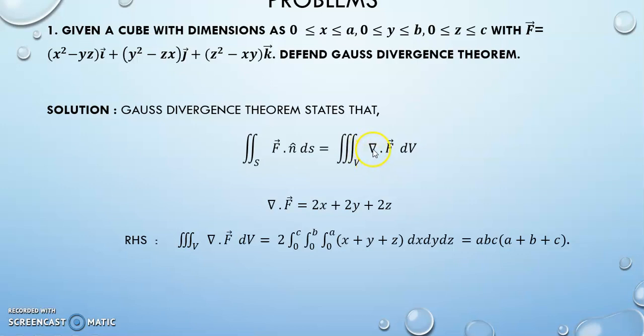I hope everyone remembers the other name for del. It is called a vector differential operator. So, you are going to take the dot product and you are getting it as 2x + 2y + 2z. So substituting that ∇·F, first I am doing my right hand side.